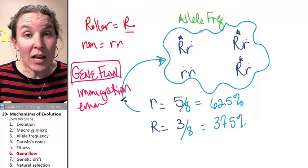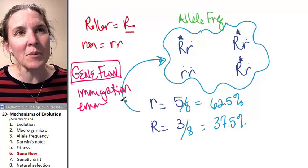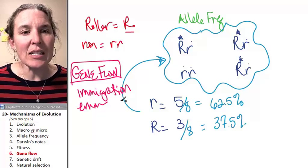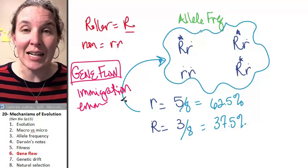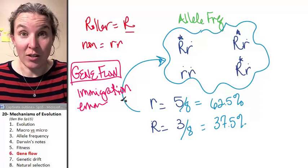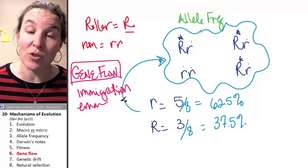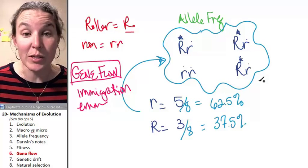Immigration and emigration both are—I don't know if random is the right word—but it's not necessarily that there is a selective pressure. If there is a selective pressure that causes immigration or emigration, then maybe you're talking about natural selection changing the allele frequency.